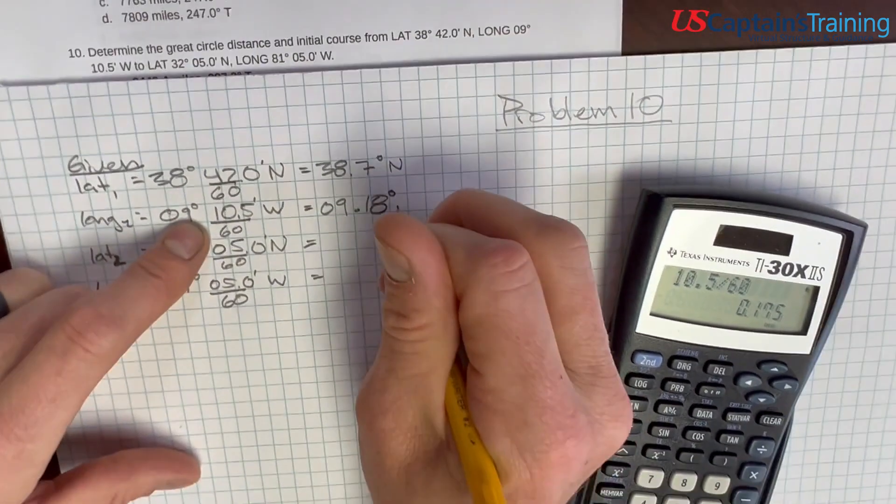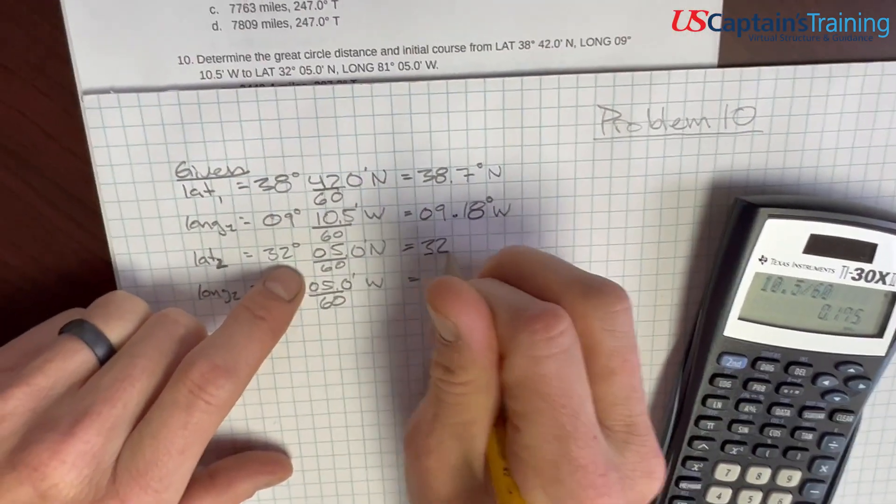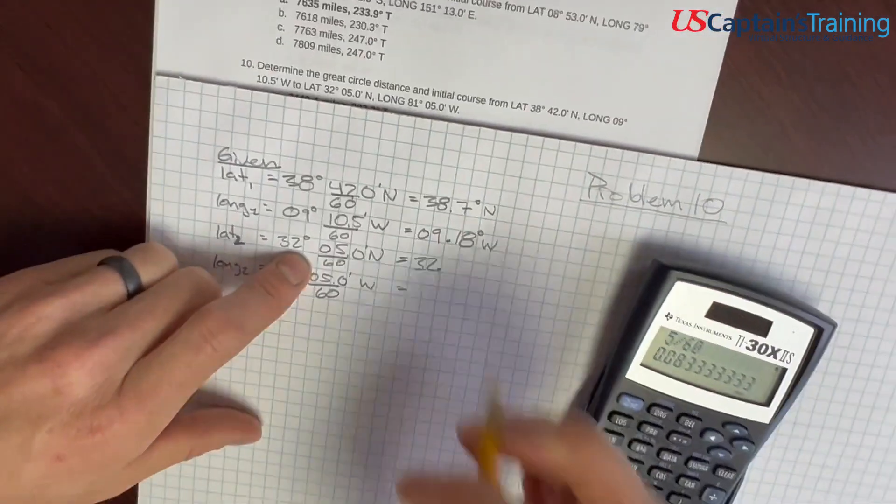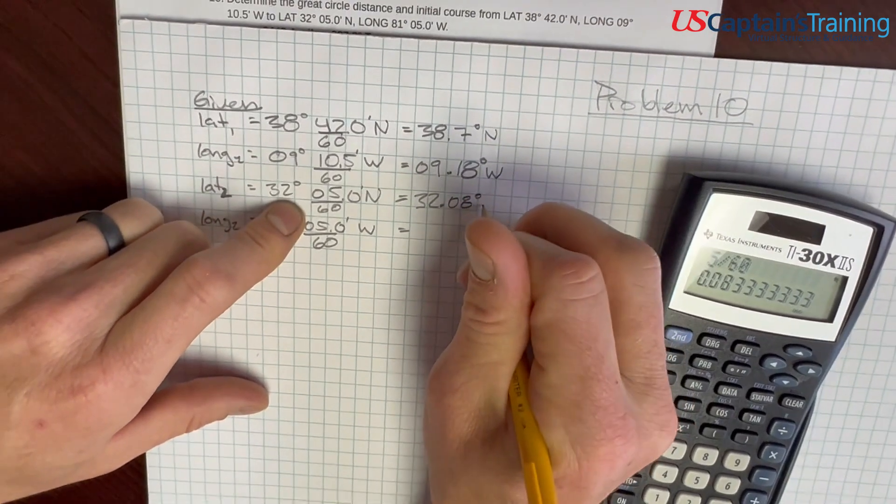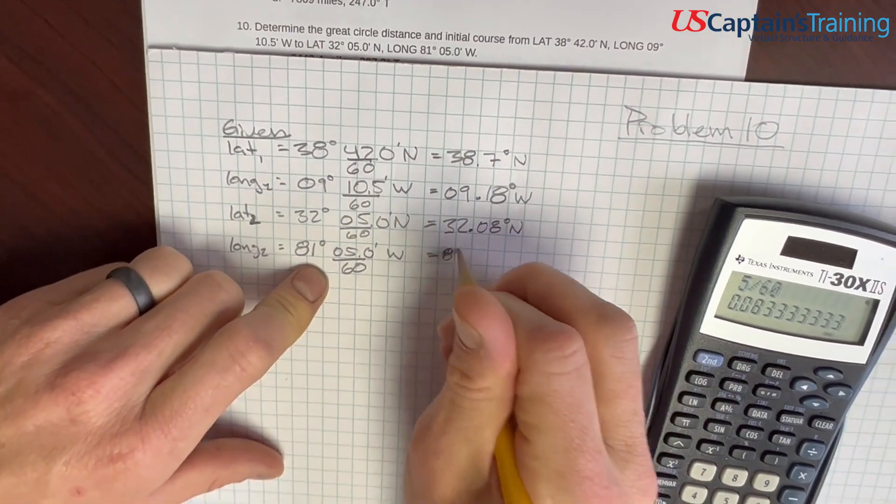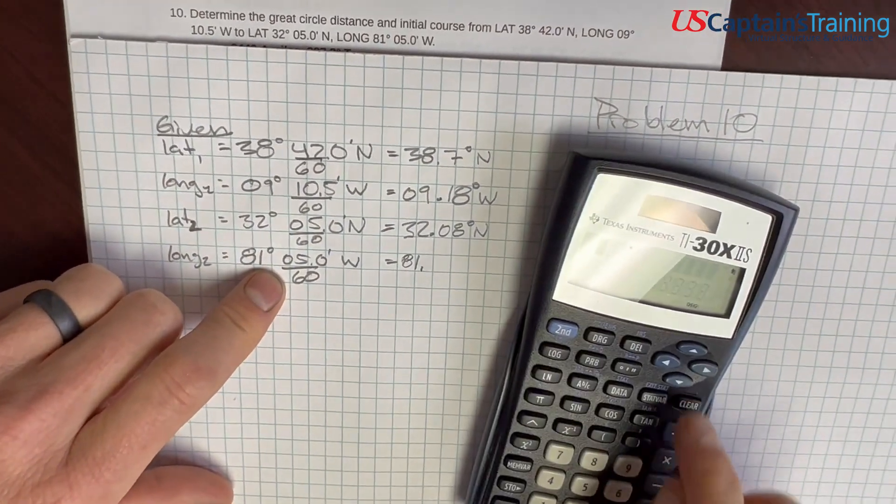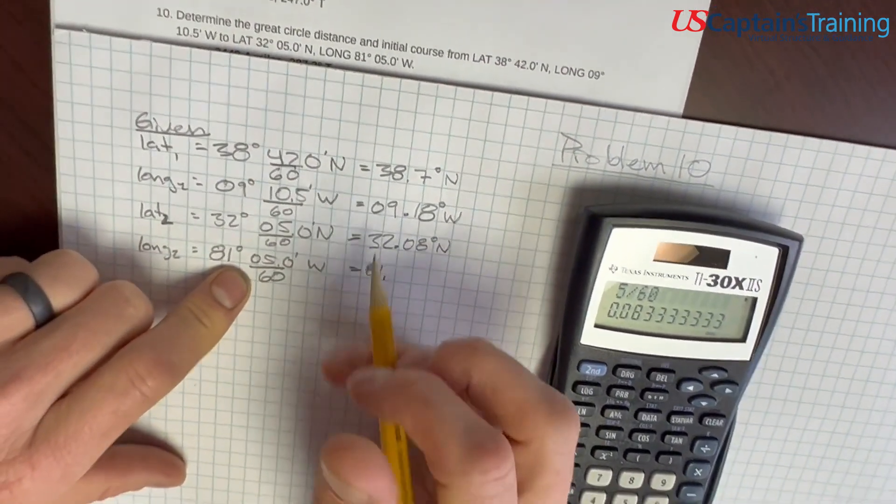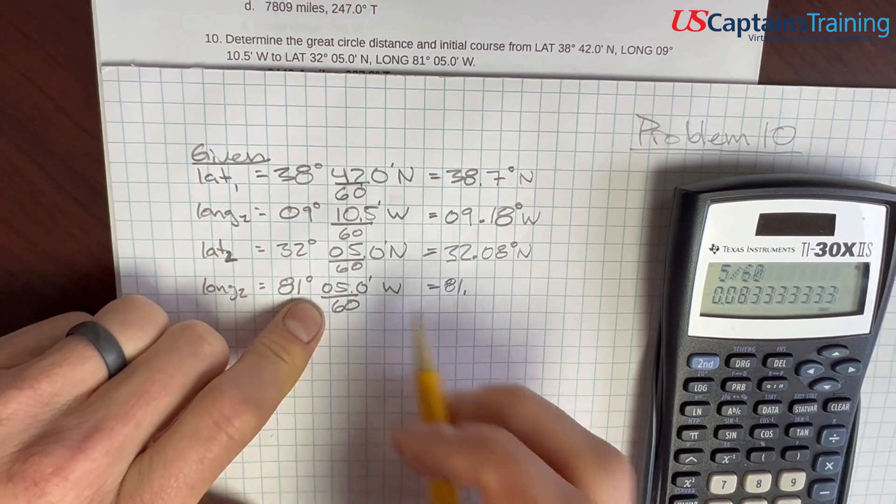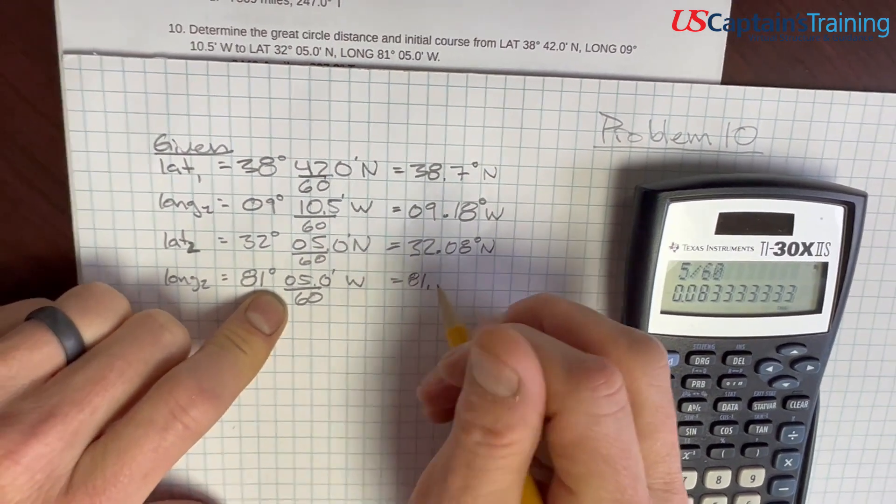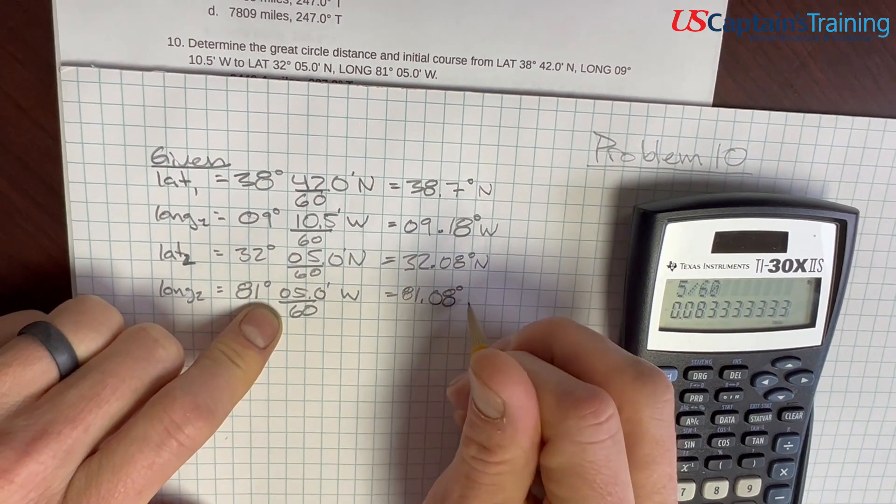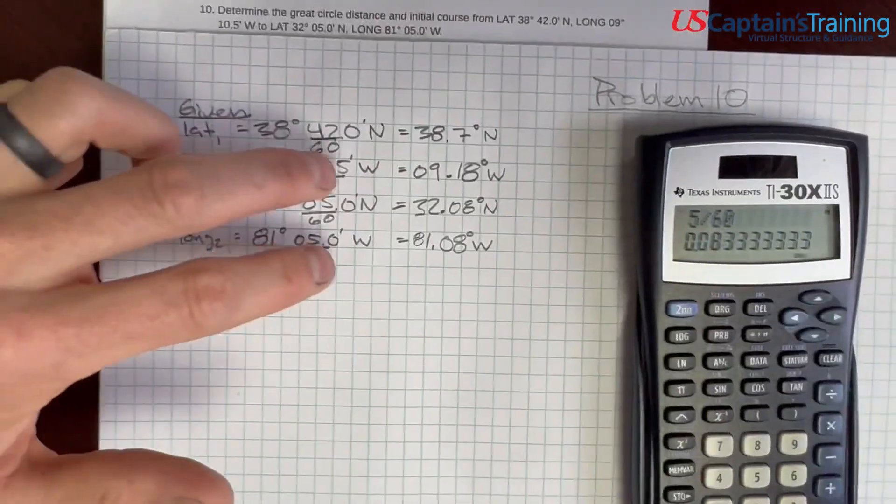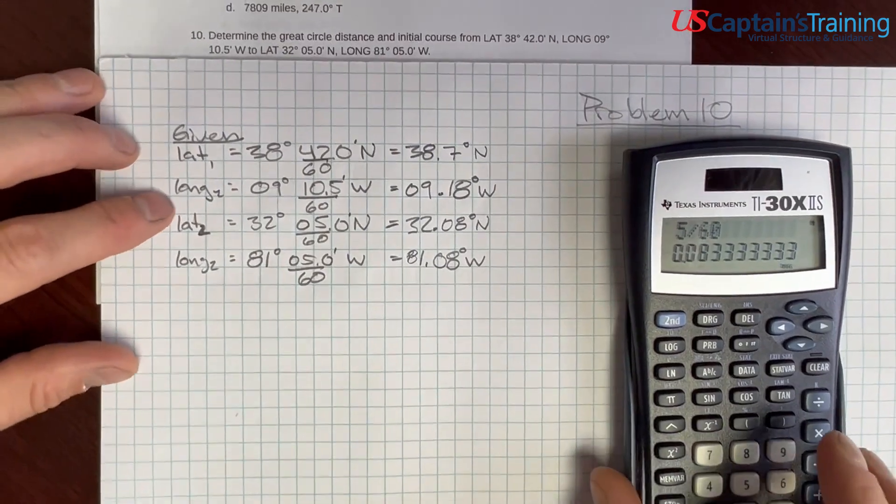32.5 divided by 60, enter 0.0808 degrees north. And 81.5 divided by 60, 0.08 degrees west. Look at this, we didn't cross the equator, we didn't cross the prime meridian, we didn't cross 180 longitude. Here's all of our lats and longs, and now we need to find D low.